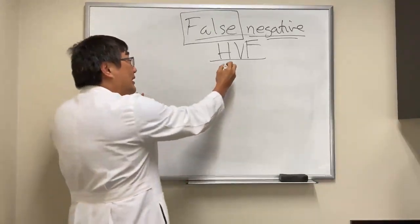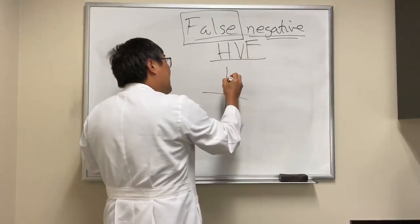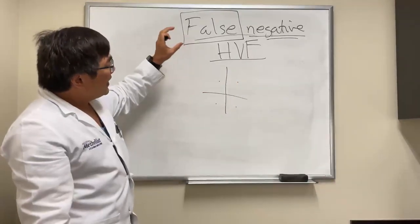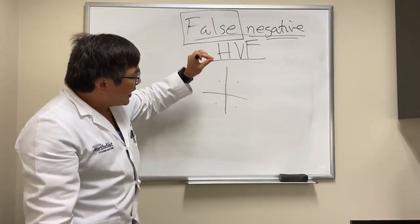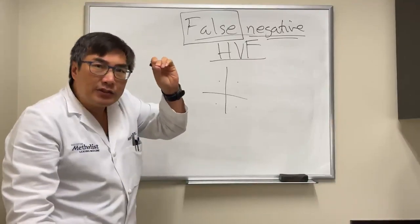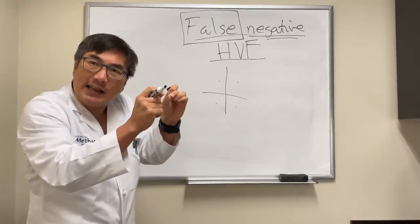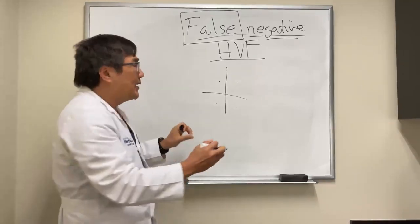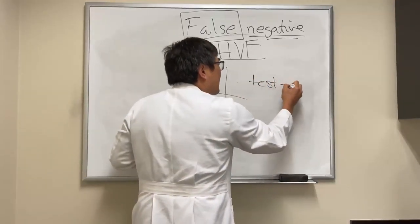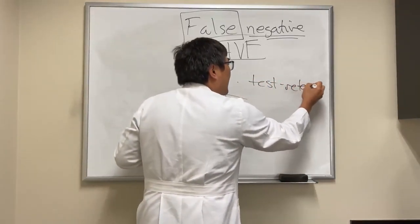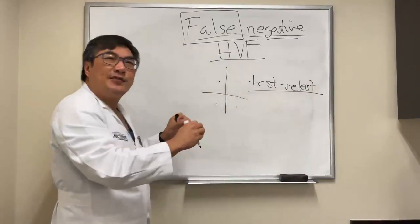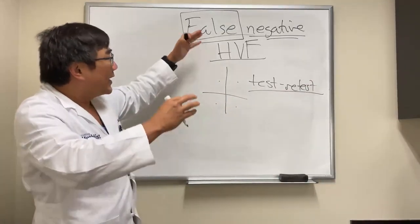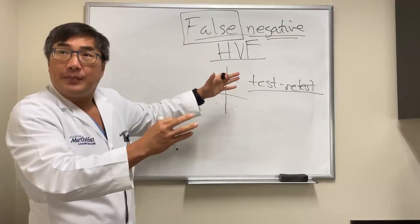The machine — the Humphrey — is testing the points in your visual field. If you have a light that you don't see, the machine retests that same point. There's a test-retest inside the test, and that test-retest variability ensures that you really didn't see that point.